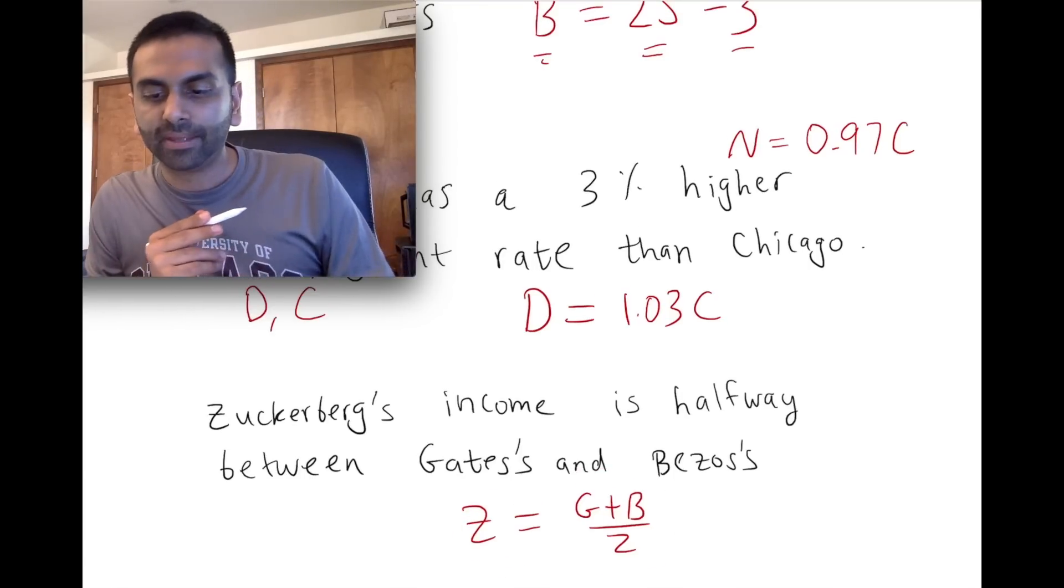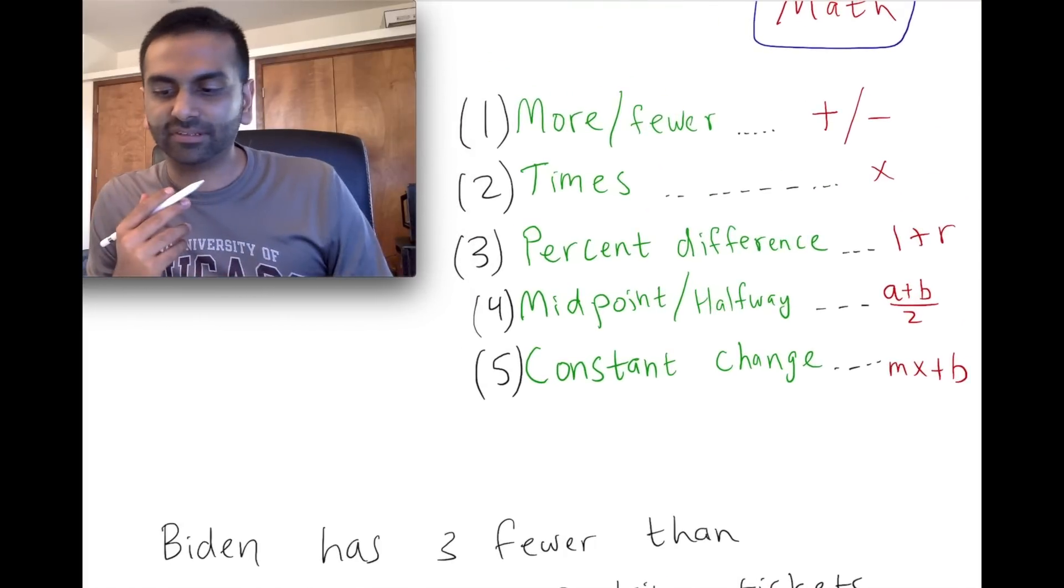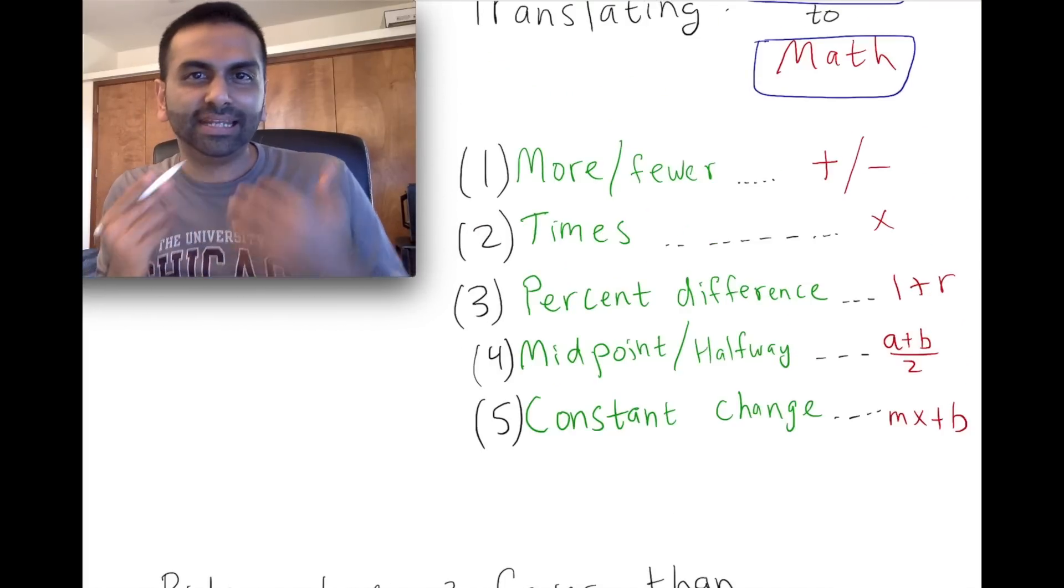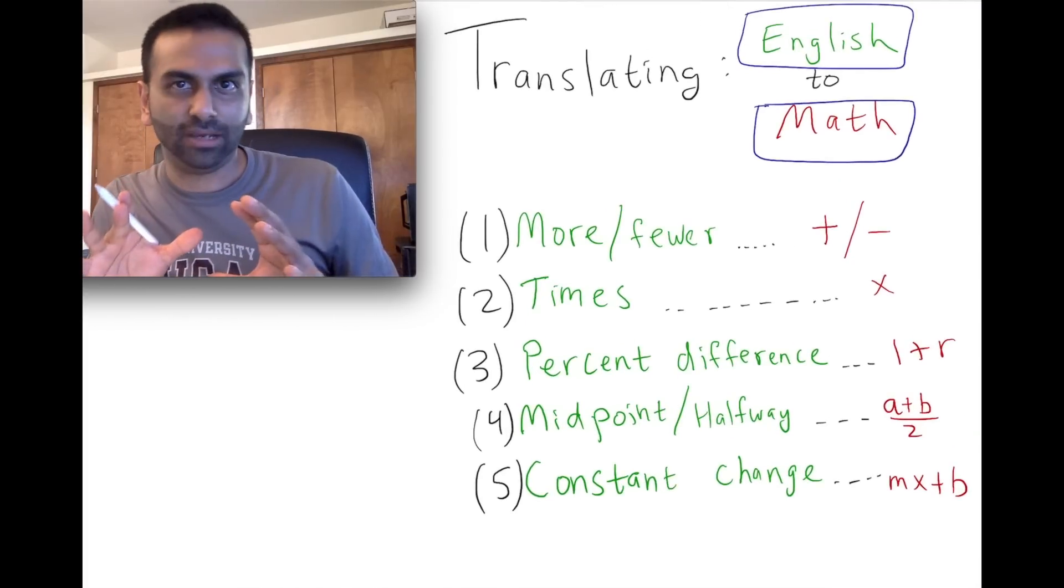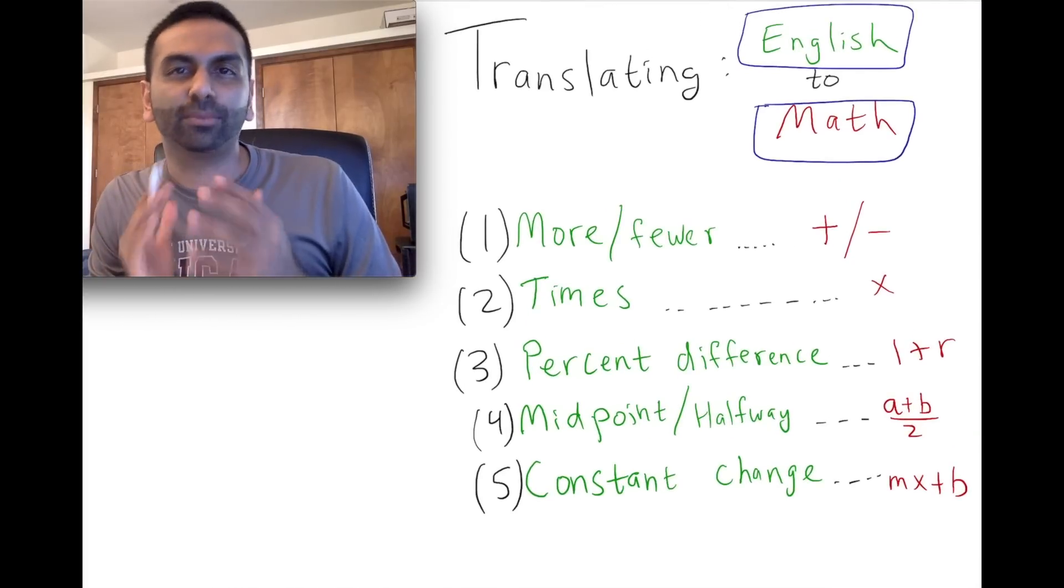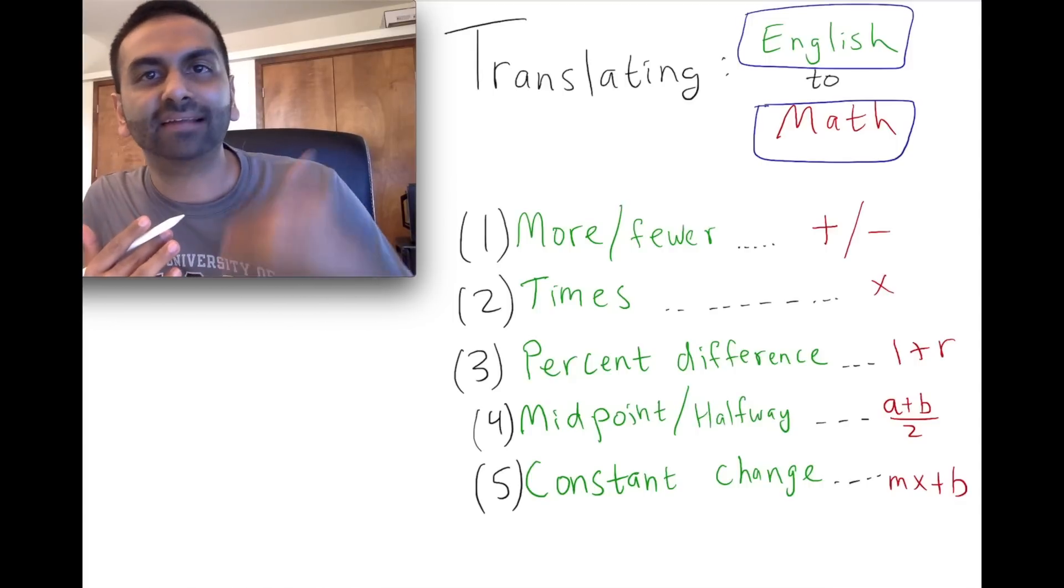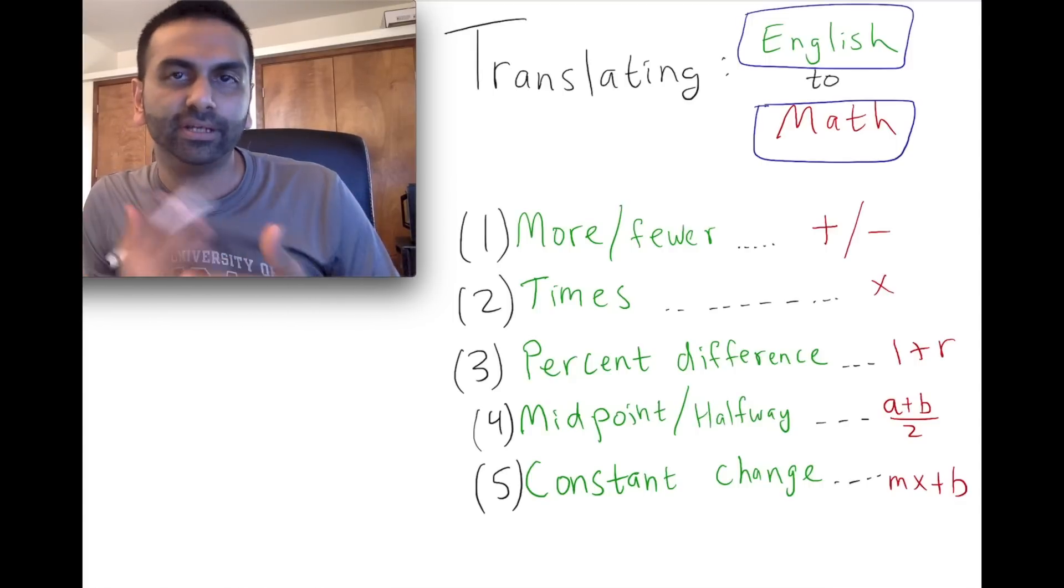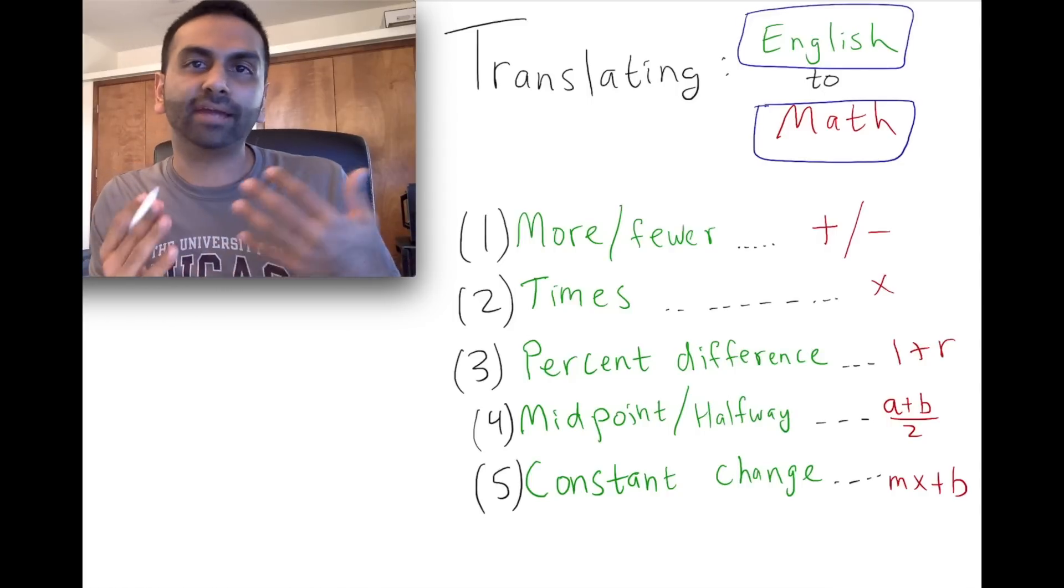Now the final thing, and this will sort of segue to the next part of this class, is linear functions. A linear relationship—the thing that defines a relationship as linear is that it's changing by the exact same amount every time period, or every whatever the x is. Unlike something like